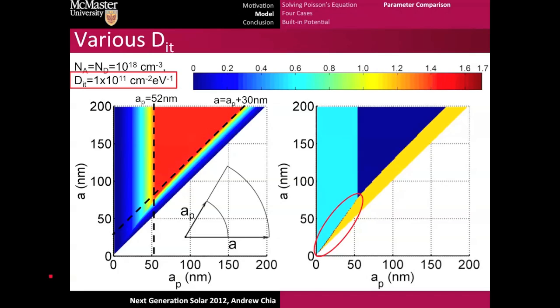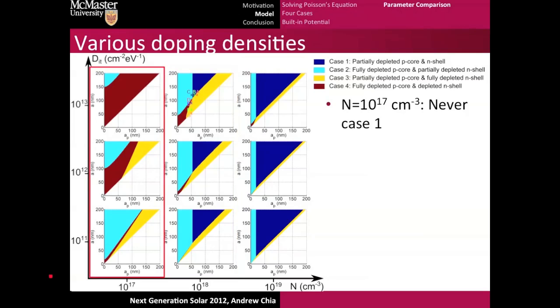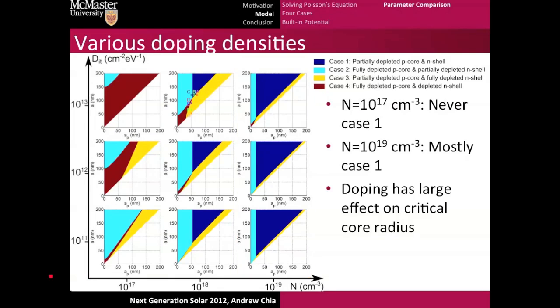We can take all the plots that we just generated and put them on a big master plot and take a look at some other common dopings. Let's take a look at the doping of 10 to the 17, and what's interesting here is that it's never in case one. If we look at the doping of 10 to the 19, we see here that it's mostly case one, as you'd expect. Here, it's clear that doping, as you move from left to right for increasing doping, has a large effect on the critical core radius.